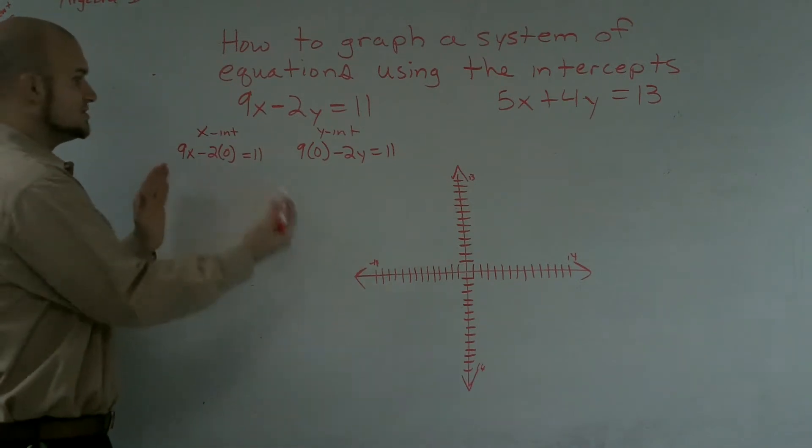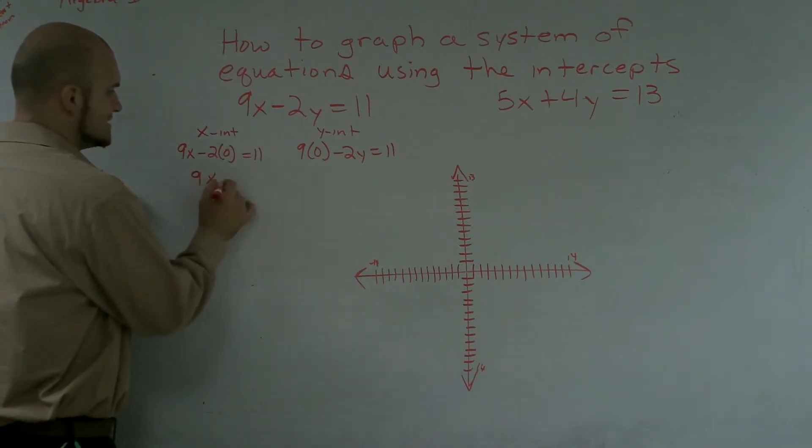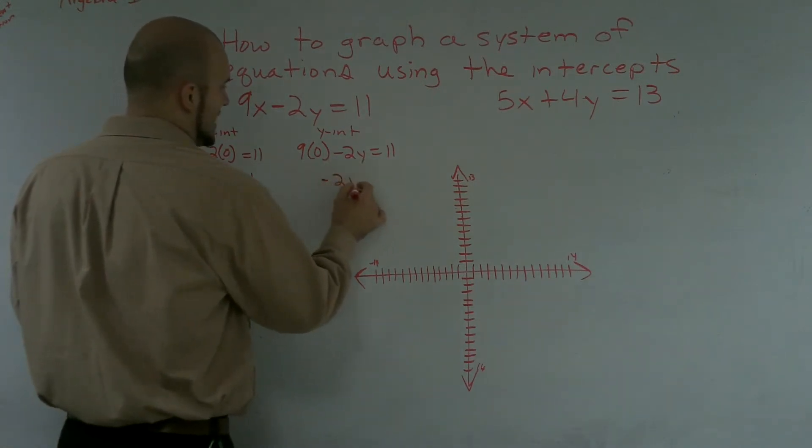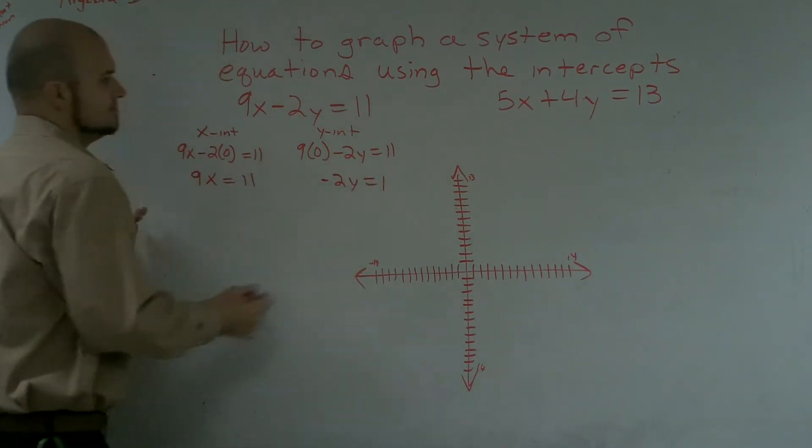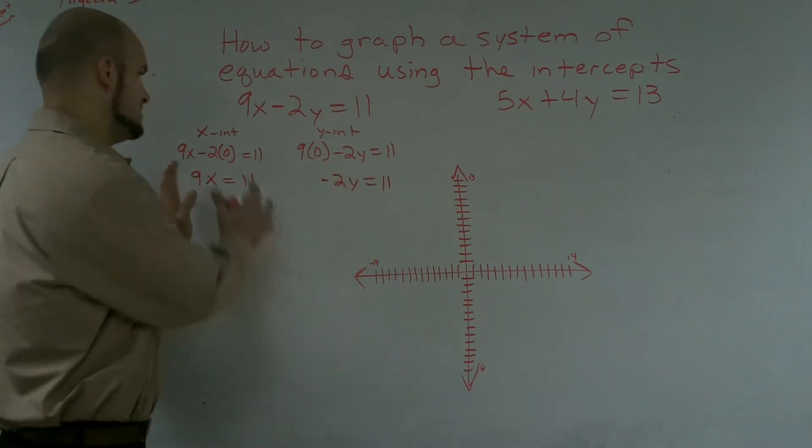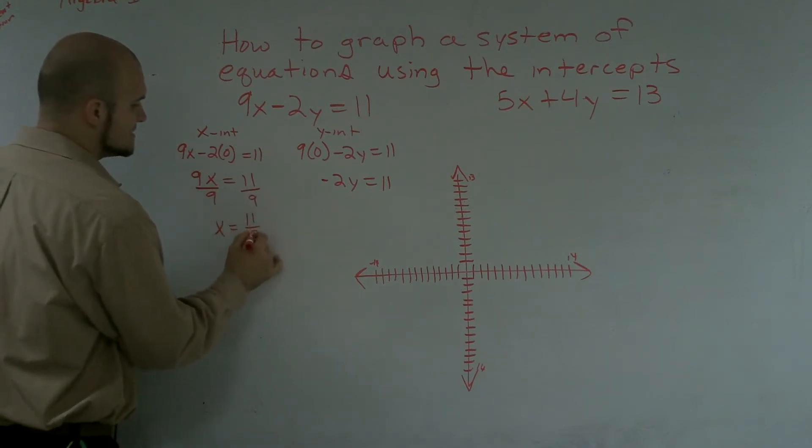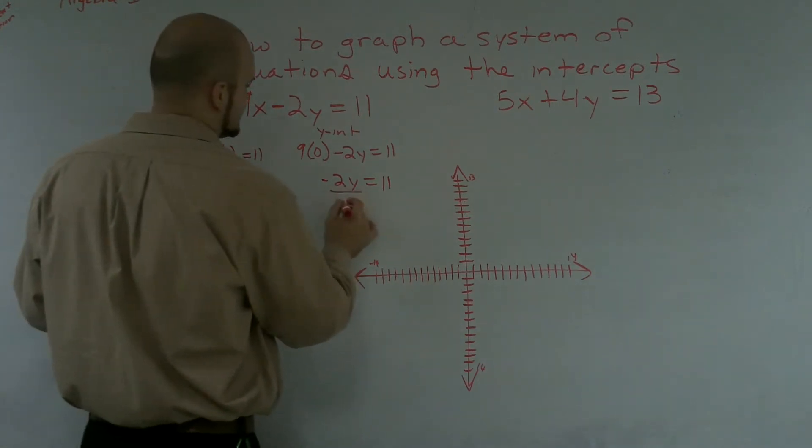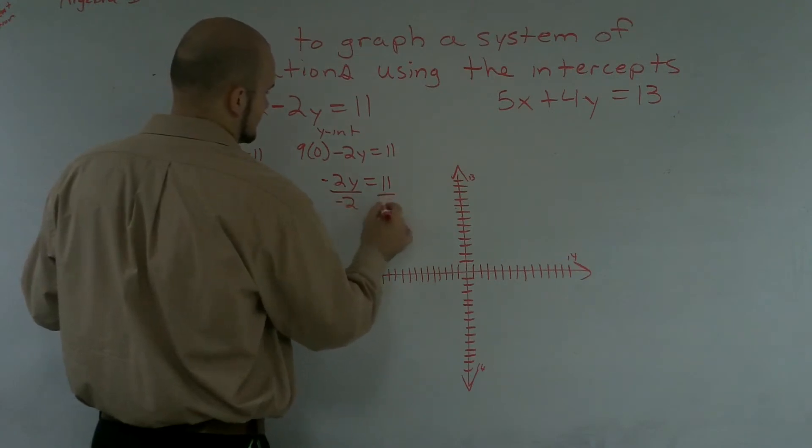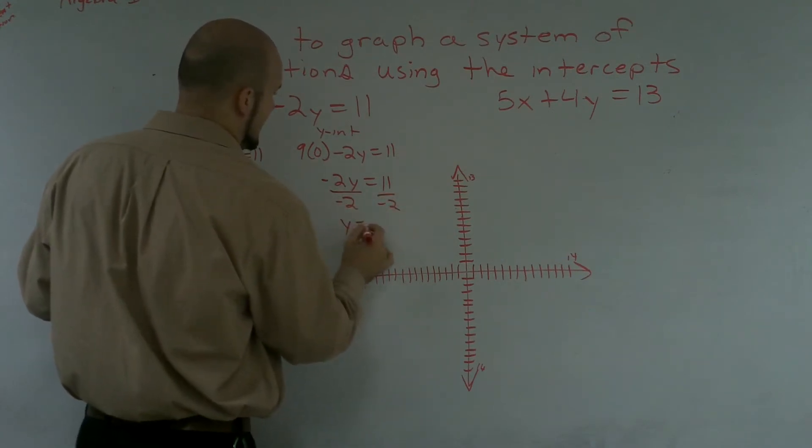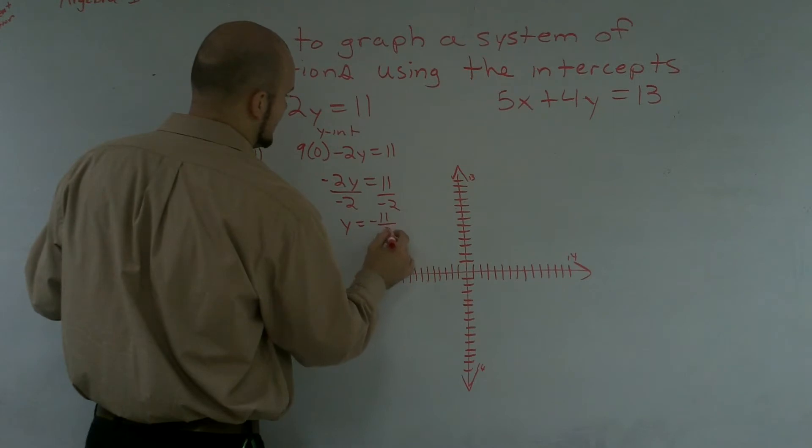Then now it's simply just doing the math. So you have 9x equal to 11. And here you have negative 2y equals to 11. Because obviously the zeros are going to cancel out each one of those numbers. I divide by 9, divide by 9, x equals 11 ninths. Over here, y equals negative 11 halves.